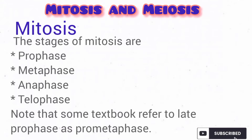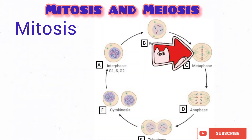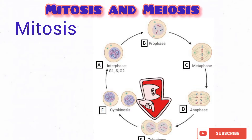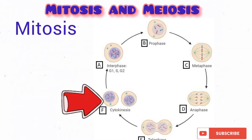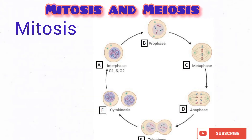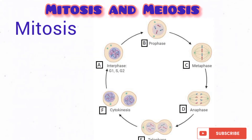What are the stages of mitosis? As you can see from the diagram, the stages are prophase, metaphase, anaphase, and telophase. Note that at the end of mitosis, a process called cytokinesis — the splitting of the cytoplasm — occurs, as shown in the diagram. After that, the cell goes back into the interphase stage and the cycle repeats itself.